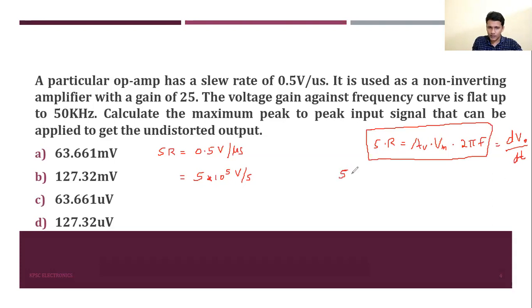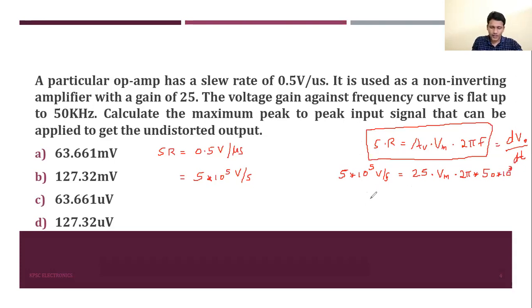So the slew rate operation gives: 0.5 × 10⁵ volt per second equals AV × Vm × 2πf, which is 25 × Vm × 2π × 50 × 10³. Solving for Vm gives the peak voltage.